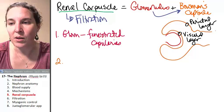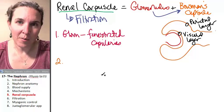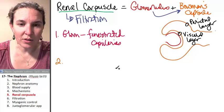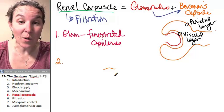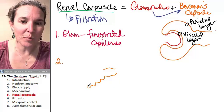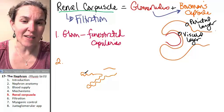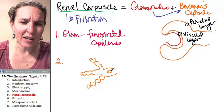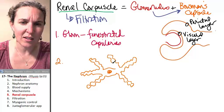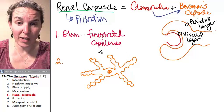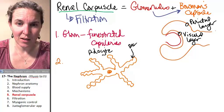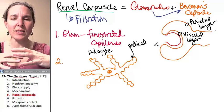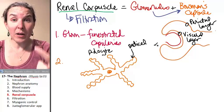The visceral layer of Bowman's capsule is unique — I have to draw it because that's how my brain works. I'm drawing the cells of the visceral layer of Bowman's capsule. They're epithelial cells, but they're not normal. They're called podocytes, and they've got these pedicels that reach out. This whole thing is a podocyte, and this part here is a pedicel.